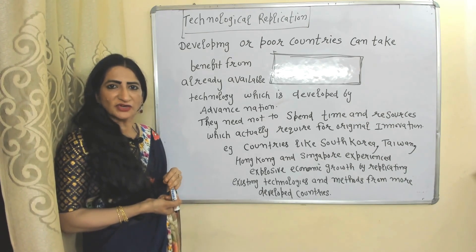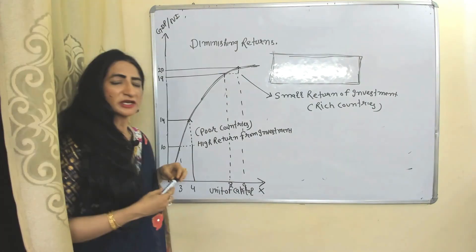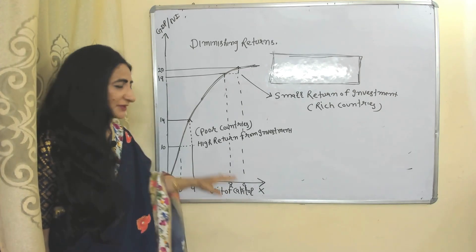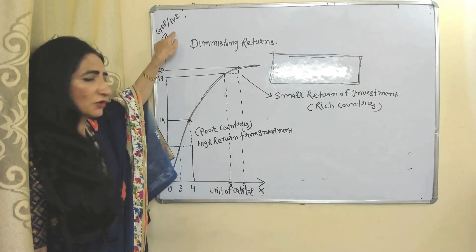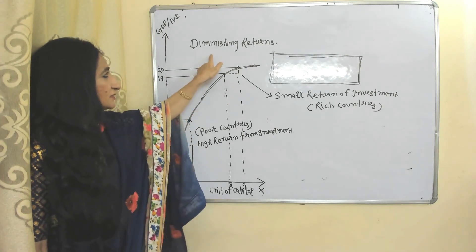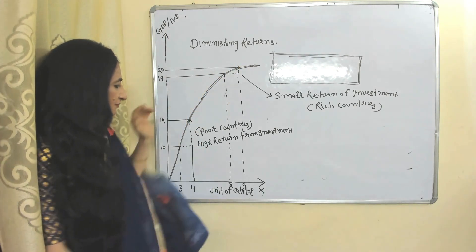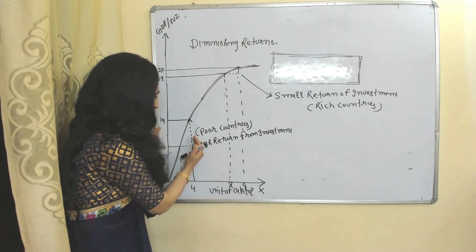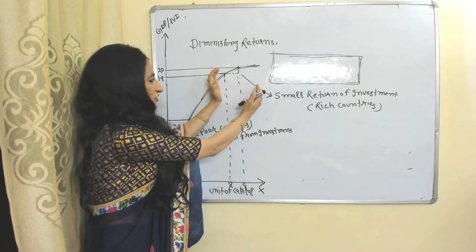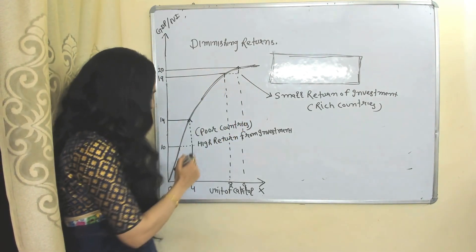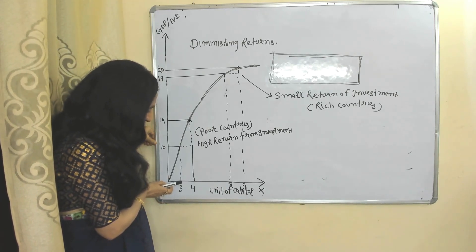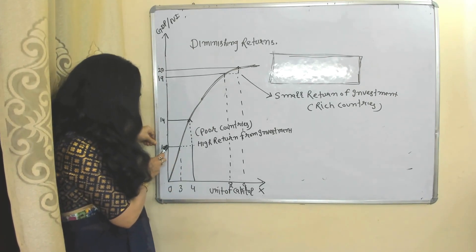Now we will look at a diagram. On the X-axis we have units of capital; on the Y-axis we have GDP, or national income. This curve shows diminishing returns. This part belongs to poor countries and this part belongs to rich countries. When a poor country increases their capital from 3 to 4, it leads to a GDP increase from 10 to 14.